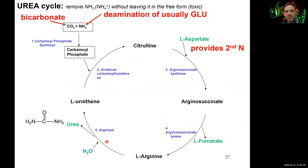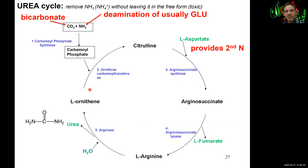Here is the entire urea cycle overview. Bicarbonate and ammonium from glutamate condense to generate carbamoyl phosphate. Similar to the TCA and glyoxylate cycles, the second substrate entering this first reaction is another cycle intermediate — L-ornithine — which can be recycled. The remainder of the cycle regenerates ornithine for the next round, and releases urea with the ammonium groups bound in it. That is the end of amino acid breakdown and removal of ammonia groups.